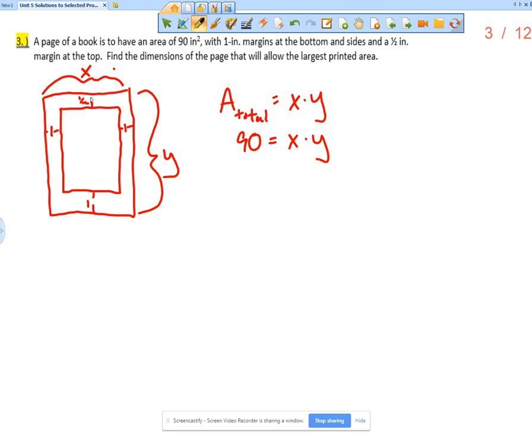So one-half inch between the top of the print and the top of the page. So what does that mean? That means this printed height is going to be Y minus one-and-a-half, or Y minus three-halves. And then this inner width is going to be X minus two.